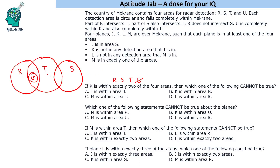K cannot be in R and S together because R and S do not overlap. S and T overlap is also not possible because J is in area S, and K cannot be in any area J is in — so K cannot be in S at all. Therefore K must be in the R-and-T overlapping region.